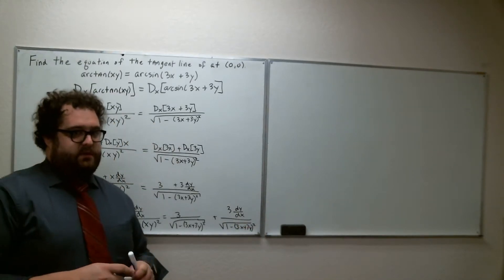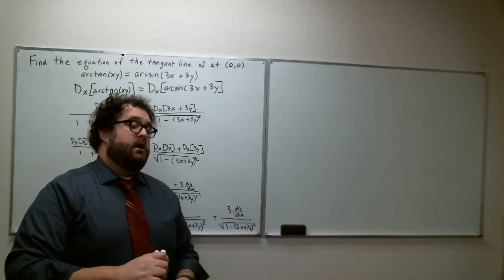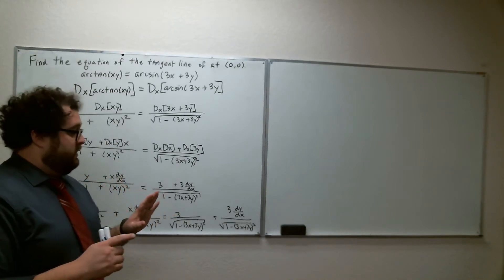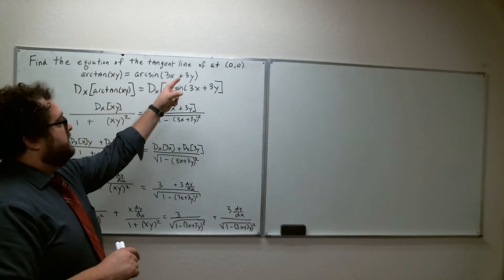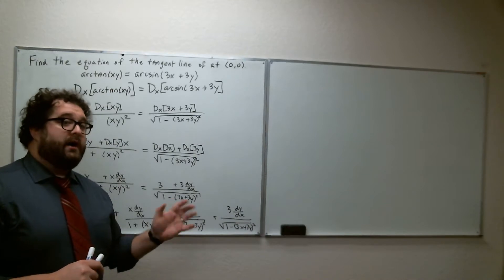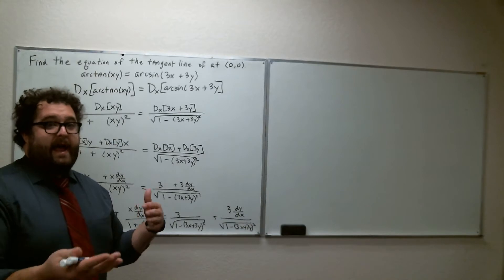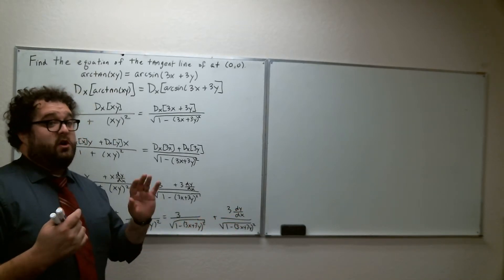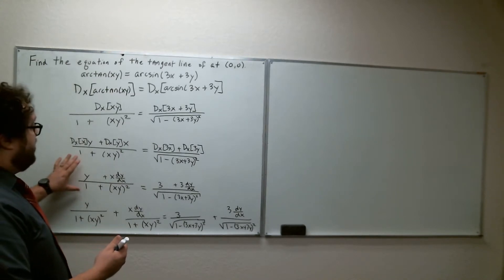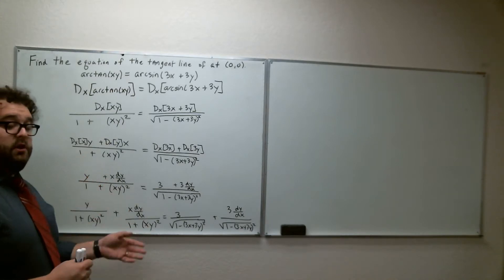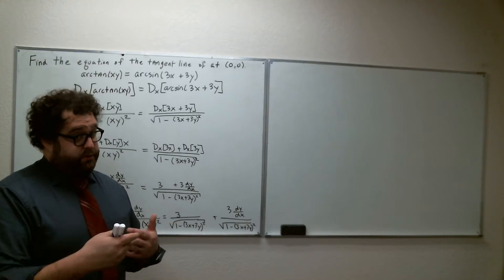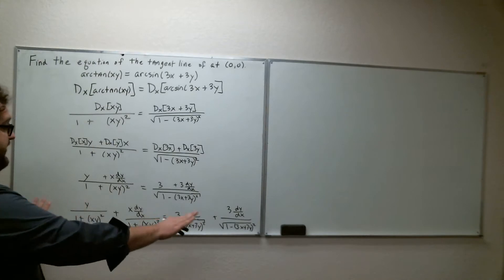There's probably an easier approach given our context: since the problem only asks for the equation of the tangent line at (0,0), we could substitute 0 for every x and y right now and simplify a lot. But I'm going to go ahead and find dy/dx fully, because that's what homework problems typically ask for. It's kind of messy here, but we'll figure it out.